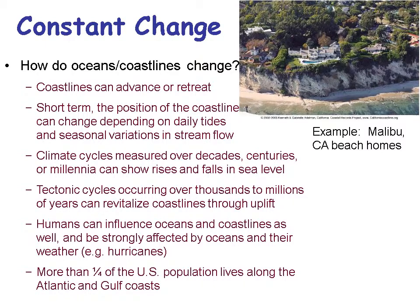How do oceans and coastlines change? Coastlines advance and retreat. Here you have a mansion in Malibu, California — beach homes — and it's a fight to keep the edge of that cliff from eroding underneath those homes. In the short term, the position of the coastline can change depending on daily tides and seasonal variations. In the long term, it changes through erosion and deposition.